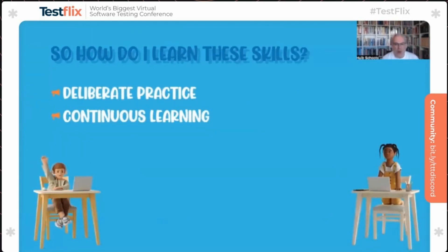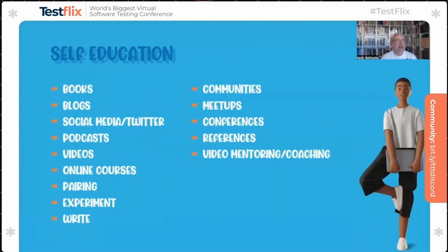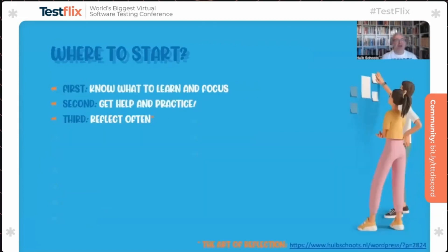How do you learn this? There are two simple ways — simple in that it's only two words on a slide, but really hard to do: deliberate practice and continuous learning. There are many trainings and formal educations like Rapid Software Testing, exploratory testing, BBST done by AST in America, Ministry of Testing, CPET and CSET. There's also a lot you can do in self-education: books, blogs, social media, podcasts, videos, communities, meetups, conferences. Know what you want to learn and focus on that, find a buddy or mentor, start practicing, and reflect often.